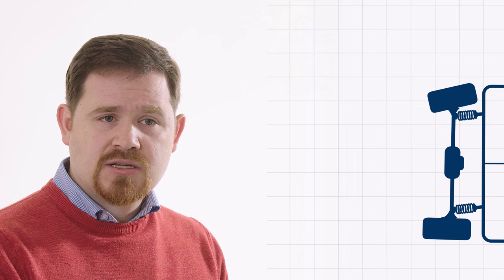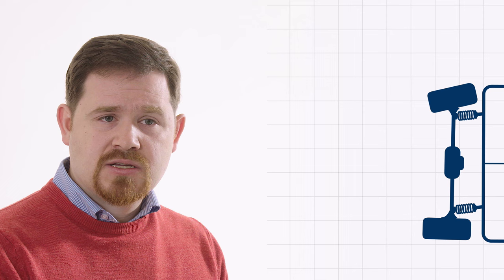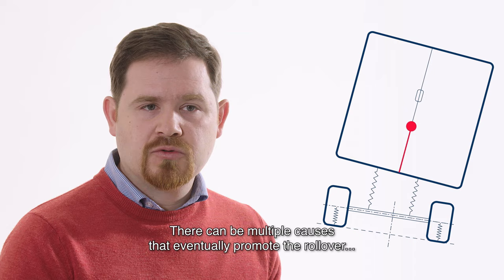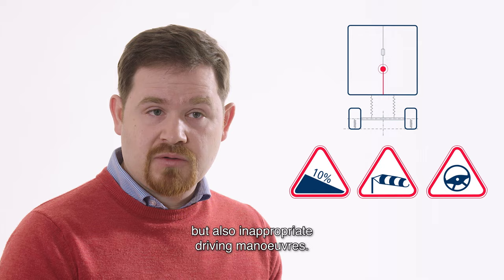One example for all can be the roll mechanics, which can eventually develop into a rollover accident. A rollover is indeed typical for all vehicles having a highly positioned center of gravity. There can be multiple causes that eventually promote rollover, such as inclined road, very strong sidewind, but also inappropriate driving maneuver. Let me now show you an illustrative example of how to solve this problem.